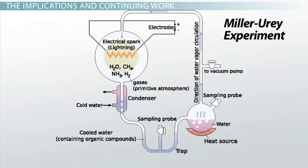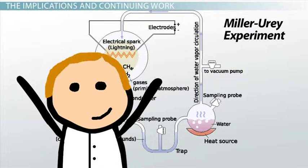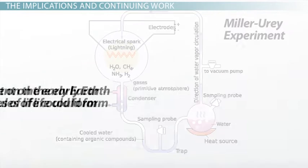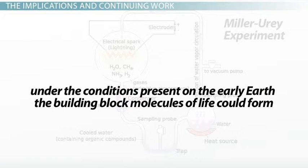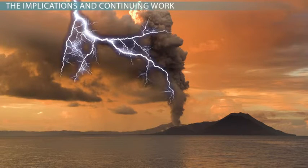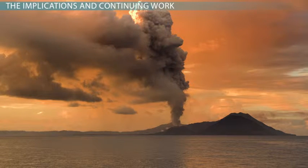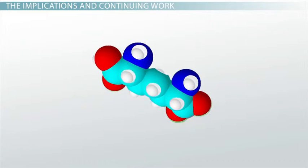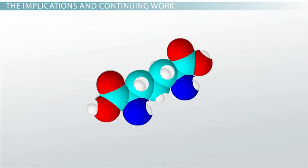The results of the Miller-Urey experiment were thrilling for scientists, and the implications were important. Miller proved that under the conditions present on the early Earth, as far as were known at the time, the building block molecules of life could form. Furthermore, we now know that early Earth's atmosphere contained a few more simple compounds that Miller didn't include in his original experiment. These additional molecules would lead to greater diversity of amino acids and other chemicals found in living cells.